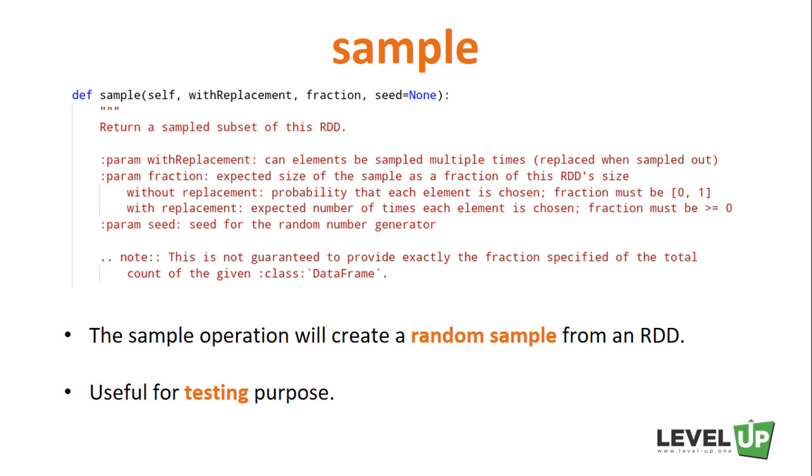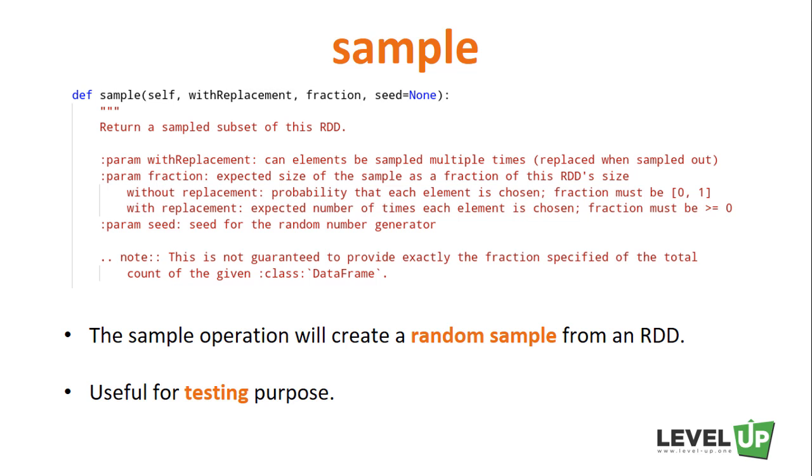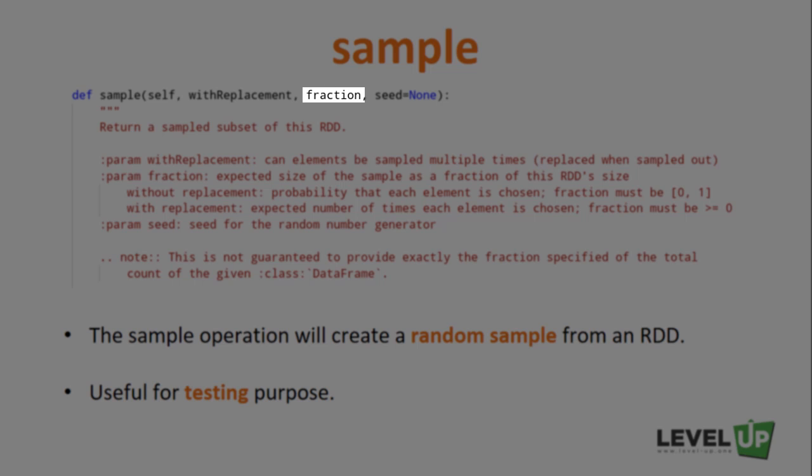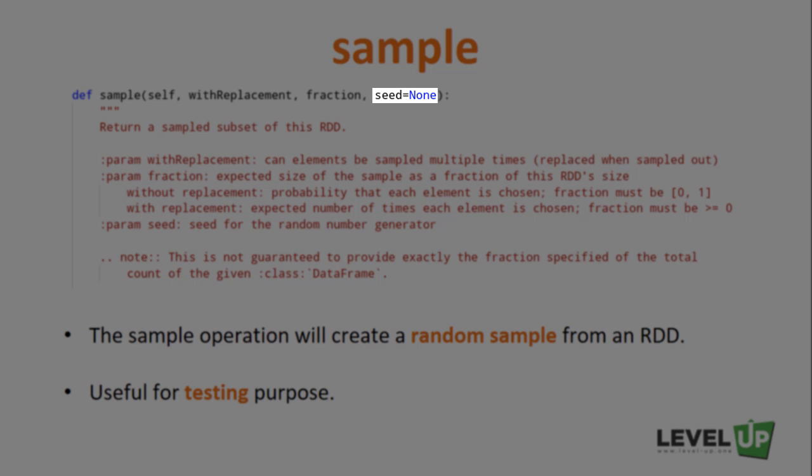The sample method takes three arguments. The first one is whether the sampling is done with replacement or not. Sampling with replacement is a way of doing sampling; it's more of a statistical term rather than a Spark concept. I reposted an article which explains what sampling with replacement is. If you're interested in learning more about it, take a look at the next lecture. The second one is the sample size as a fraction. Let's say we want to take one-tenth of the original dataset. We can just put 0.1 as the sample size. The third argument is the seed used for generating random numbers.